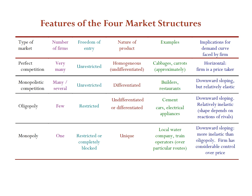The important thing to note is there are four different market structures — every other kind of market revolves around these four. Here we have a table showing the type of market, number of firms, freedom of entry, nature of the product sold, some examples, and the implications for your demand curve.